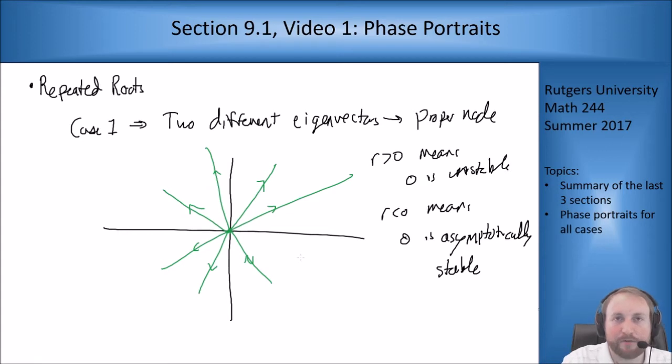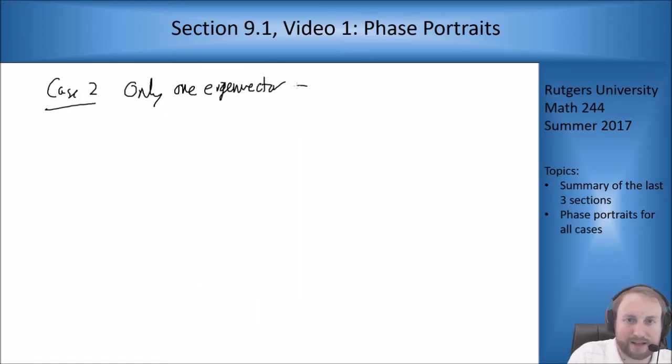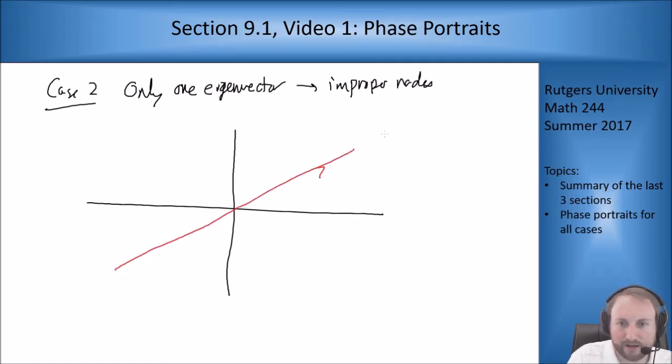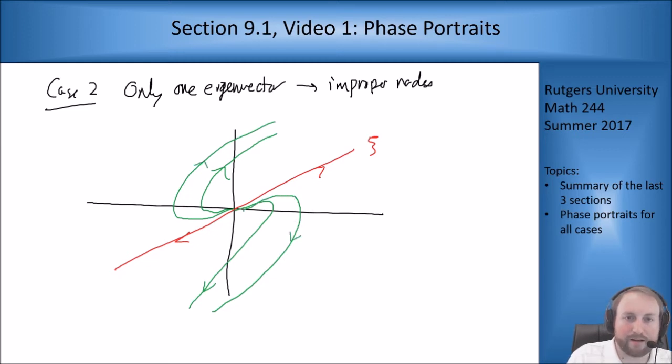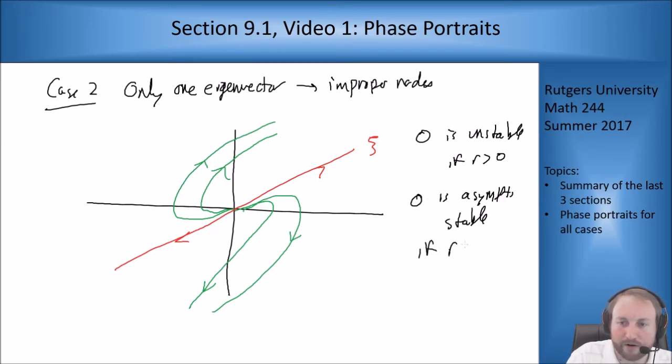Case two was if we needed to use a generalized eigenvector. This gave us our improper nodes. Those looked something like you've got your eigenvector here. And then your curve looks something like this. Depending on the actual sign and specific problem you'll either get this curve or the other one. We have zero is unstable if r is positive and zero is asymptotically stable if r is negative just as before.